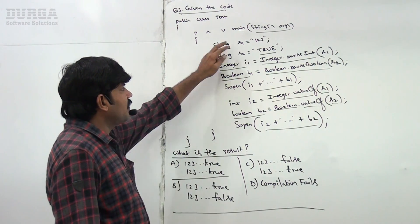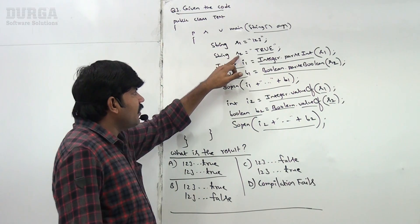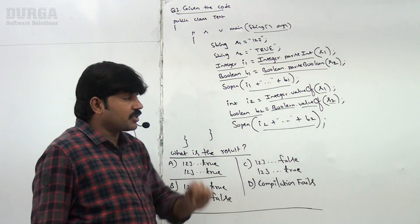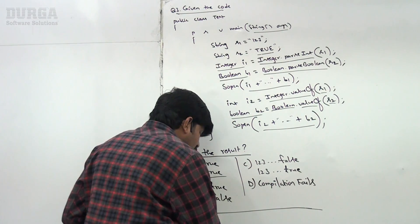Now let me go for what is the value of s1: "123", what is the value of s2: "TRUE". Both are in String form. Now the first one is...